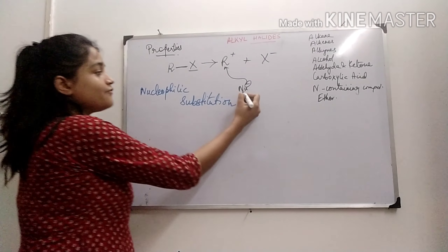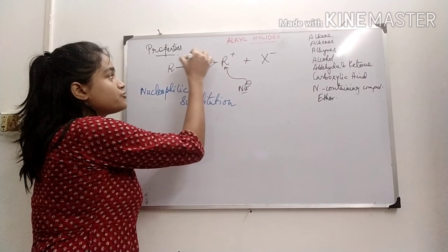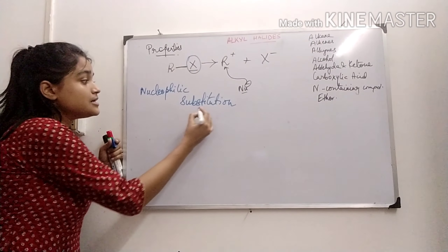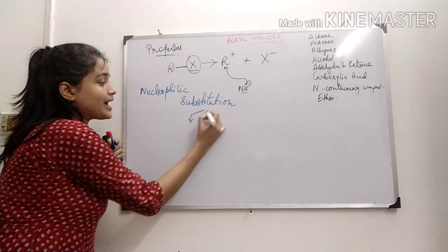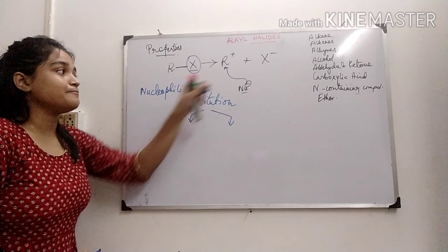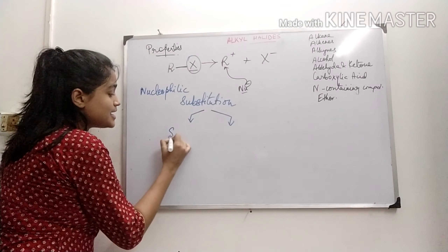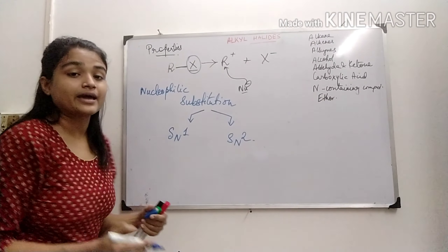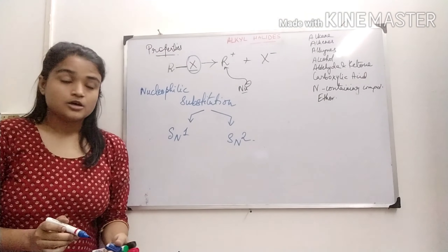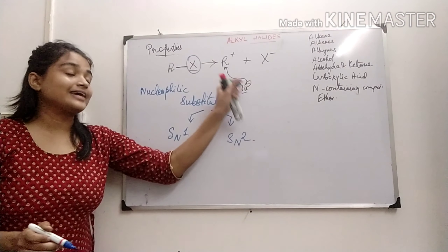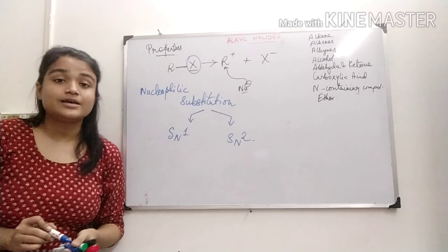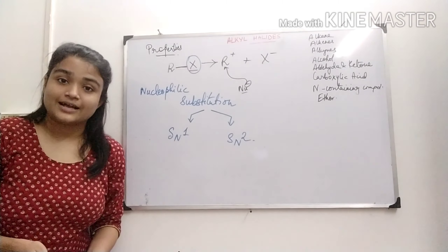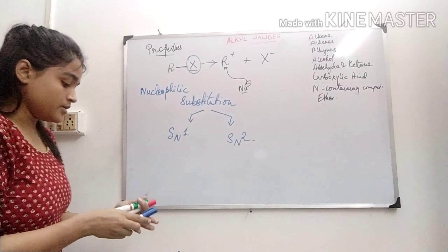Any nucleophile can come and substitute the halide group. This nucleophilic substitution can be of two types — it can take place in two ways. One is SN1 and another one is SN2 mechanism. The nucleophile follows the SN1 or SN2 pathway depending on the type of substrate or the carbocation that is formed.